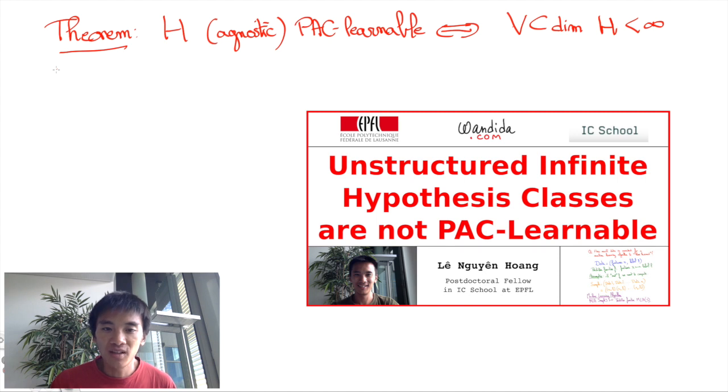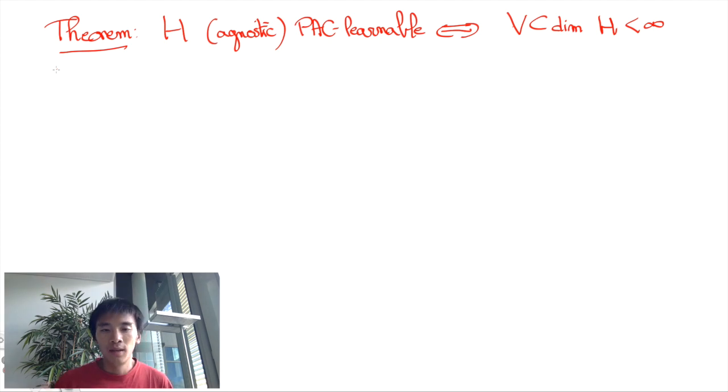I'll let you ponder the details of how to adapt the arguments we used for unstructured infinite hypothesis classes to infinite VC dimensions. Now, the right-to-left implication is much harder. The proof relies on two lemmas. The first one is a lemma by Sauer, Shelah, and Perles.